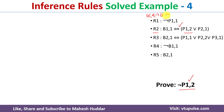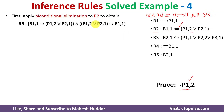The biconditional elimination rule states: alpha biconditional beta is always equivalent to (alpha implies beta) and (beta implies alpha). We apply the same rule to R2, so it becomes B11 implies (P12 or P21), and (P12 or P21) implies B11.